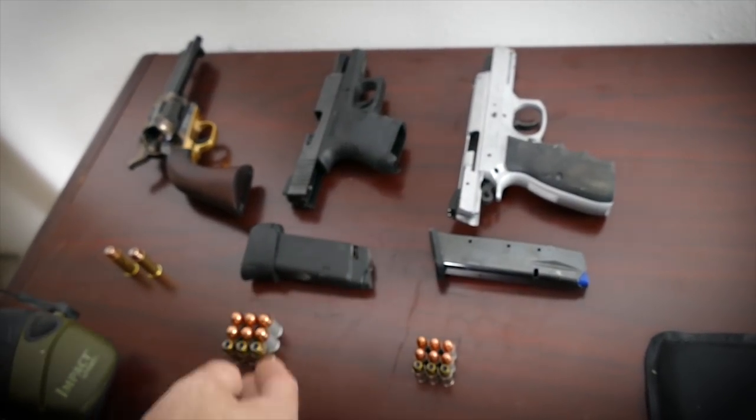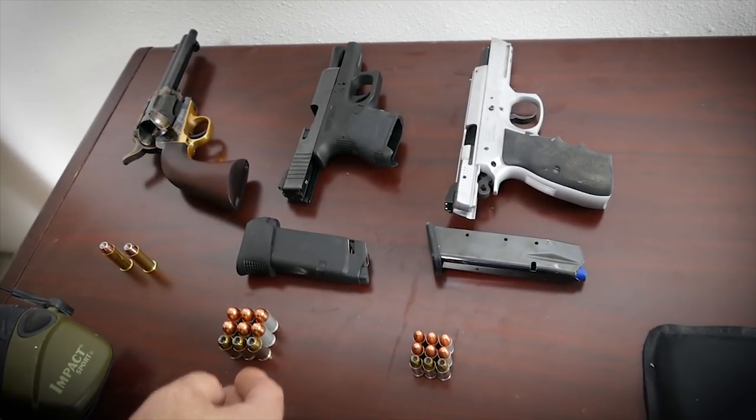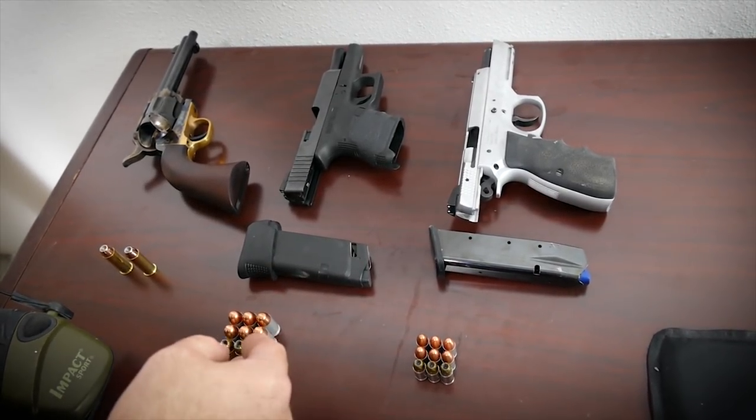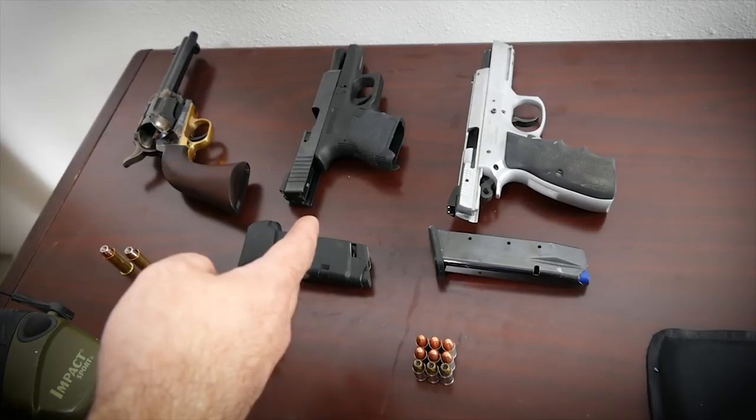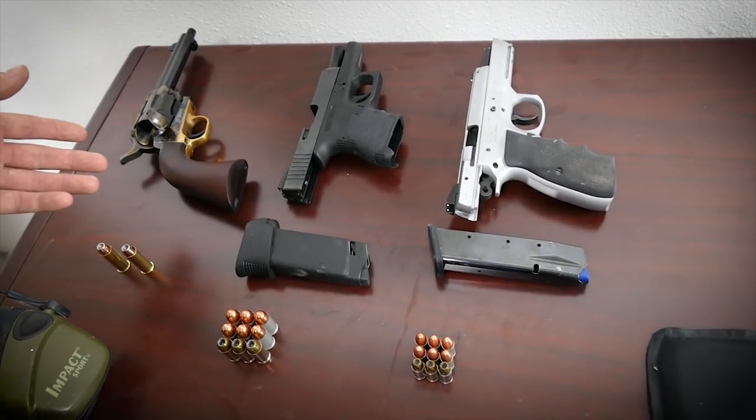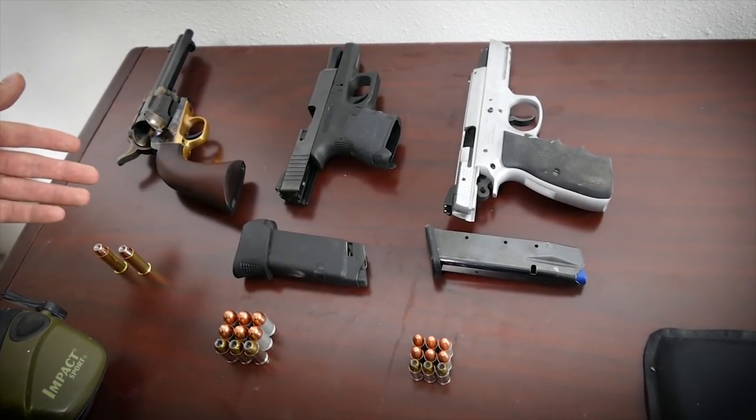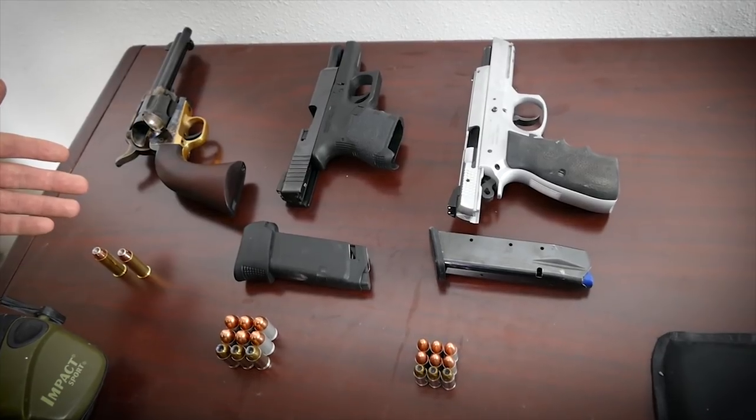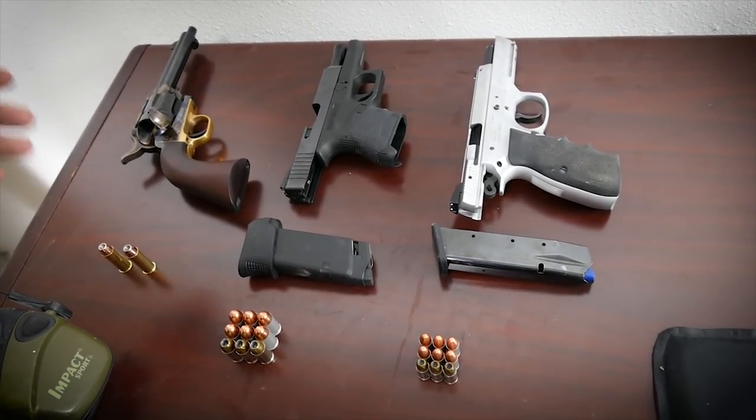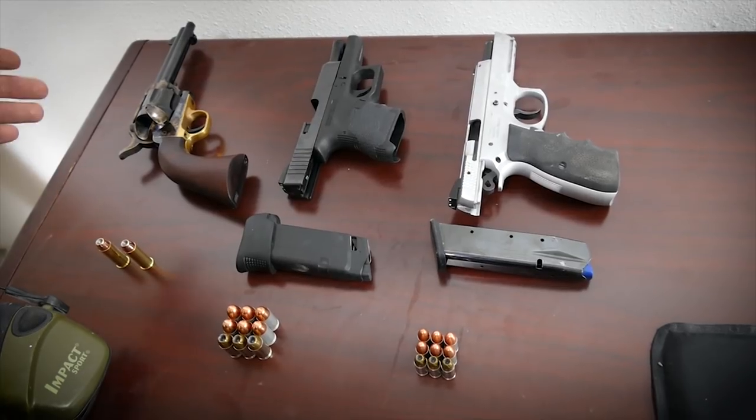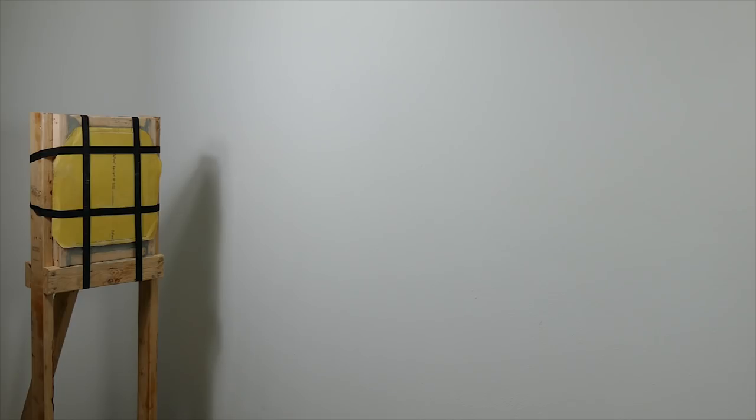For the 45, we're going to be shooting Golden Sabre plus P ammo and more cruddy ball ammo out of a Glock 36. And then for the 44 magnum, we're going to be shooting Hornady XTP, moving at 1,350 feet per second as a jacketed hollow point out of our 1873 Pieta.